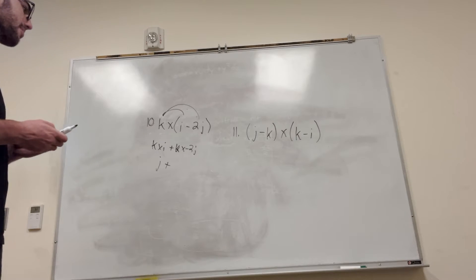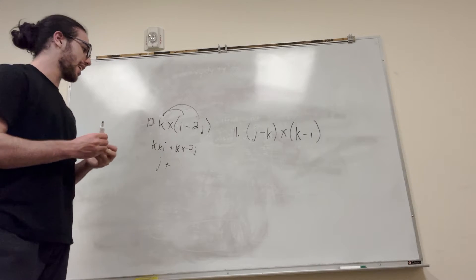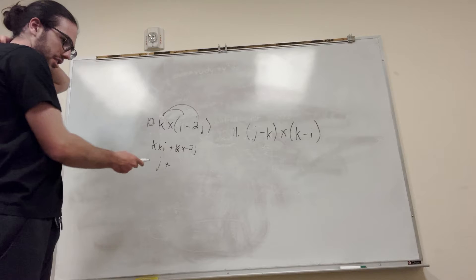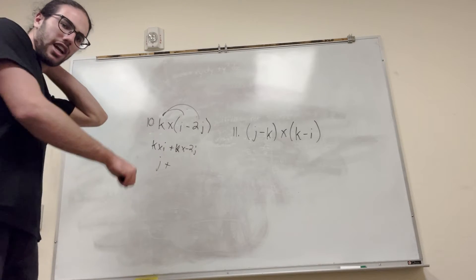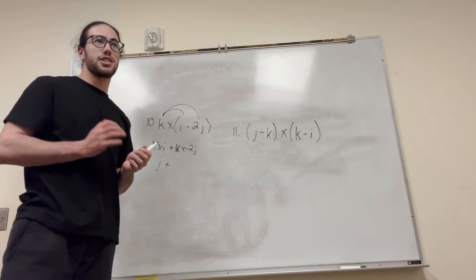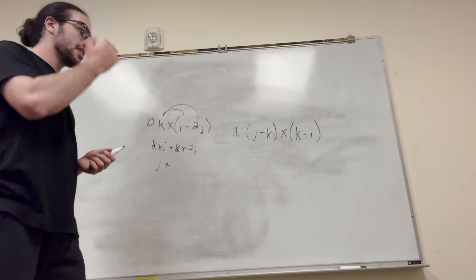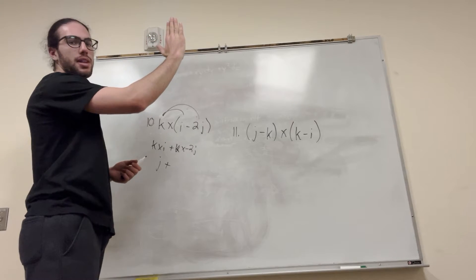So k crossed with 2j. So let's think about it. Or negative 2j. Well, the negative 2 is just a scalar, but it means it's just going along the j direction. So k crossed with j. Let's think about this. So i, j, k. K is pointing straight up, but then it's negative j.